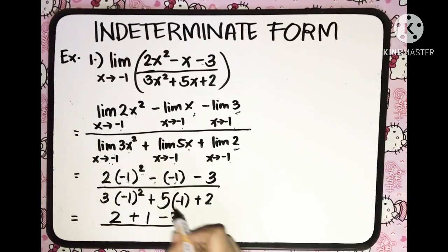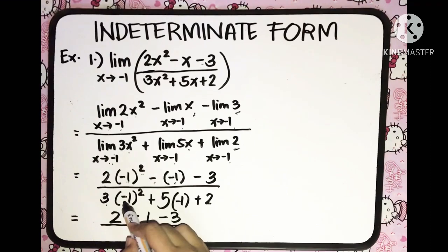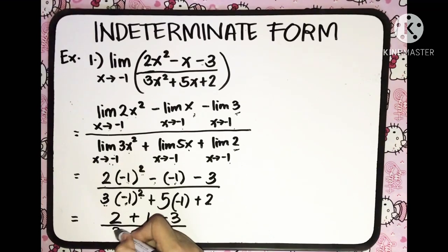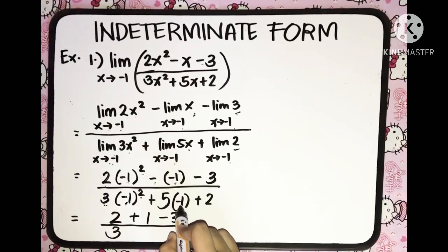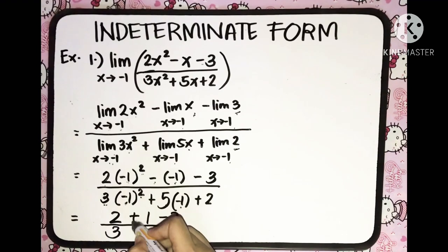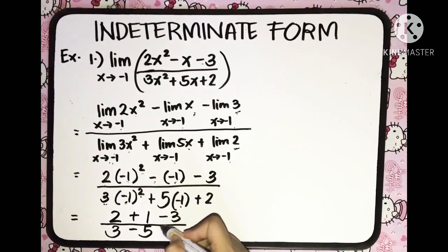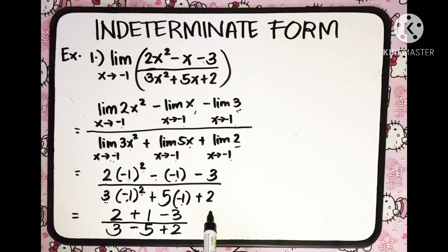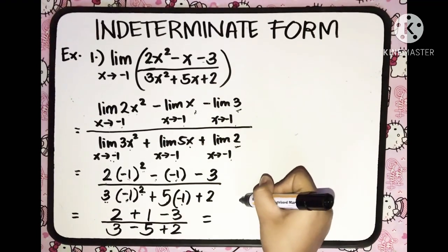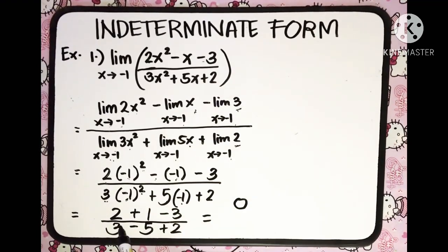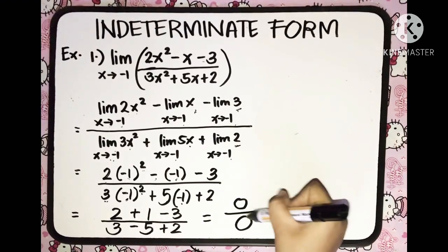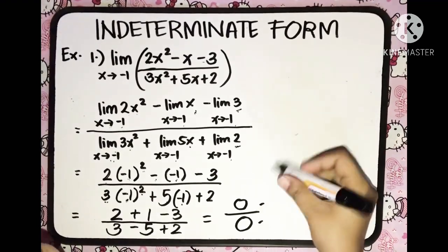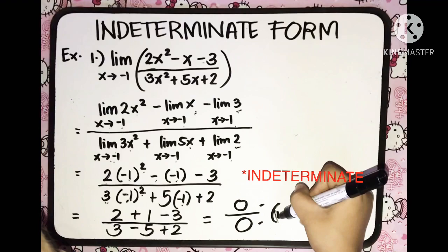Then minus 3. All over: 3 multiplied by negative 1 squared — negative 1 squared is 1, so 1 times 3 is 3. Then 5 multiplied by negative 1 is negative 5, and plus 2. Simplifying: 2 plus 1 is 3, minus 3 equals 0. All over: 3 minus 5 is negative 2, plus 2 equals 0. So we have 0 over 0, and this is an indeterminate form.